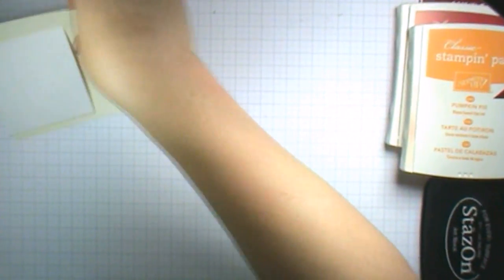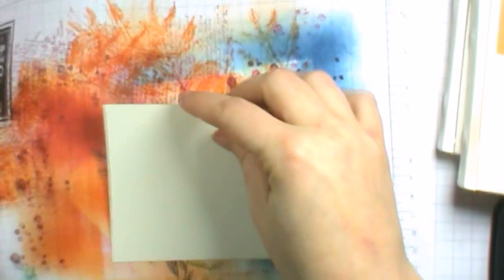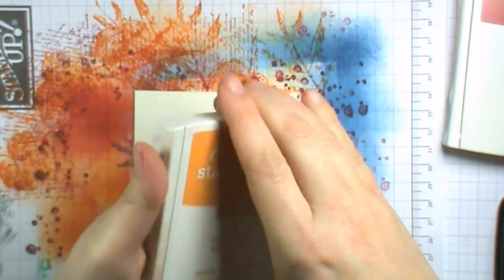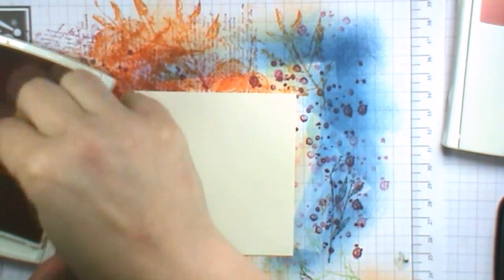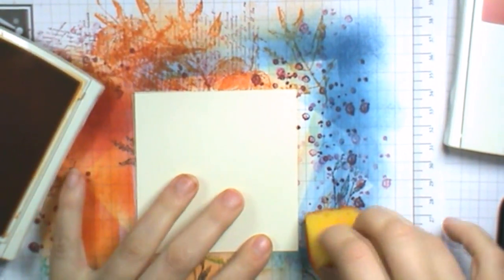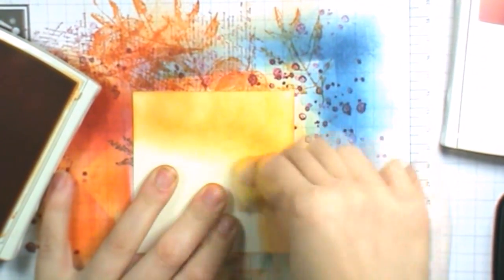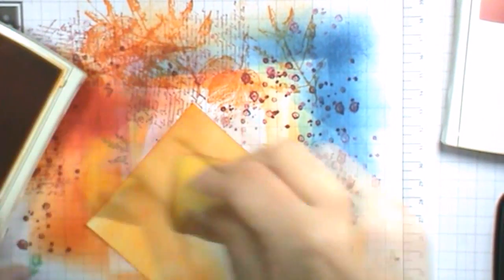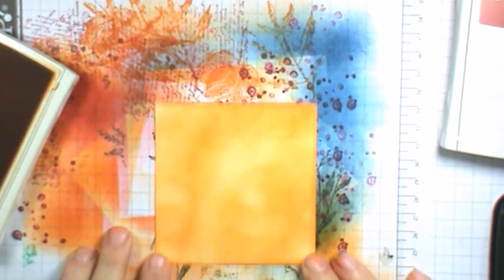We will then take our Very Vanilla and using a scratch piece of paper, we will take a sponge and our Pumpkin Pie ink pad and we will start on the scratch paper and just start circling and then go over onto the paper. This stops any blotching happening from around the edges and then you just get that to the color you wish.